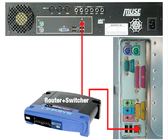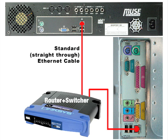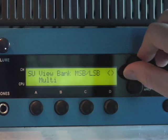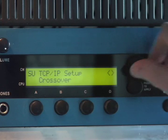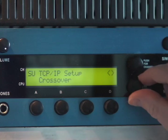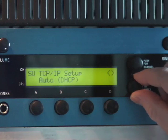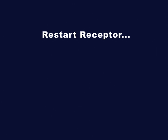If you're connecting Receptor to an Ethernet switcher, then use a standard or straight-through Ethernet cable, set Receptor to either Auto-DHCP or Manual IP mode, and then shut down Receptor and restart it.